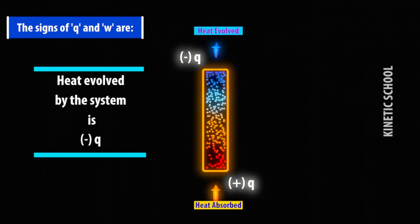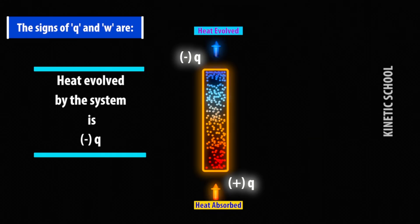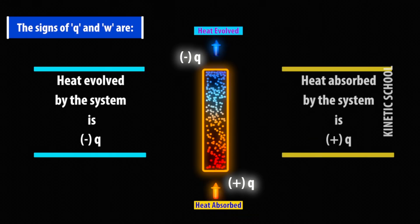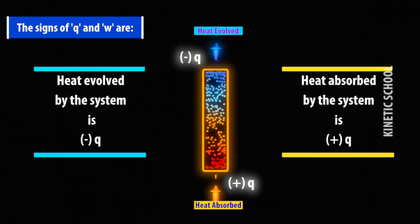When heat is evolved by the system, the sign of Q is negative. And when heat is absorbed by the system, the sign of Q is positive.